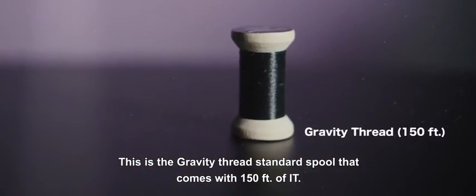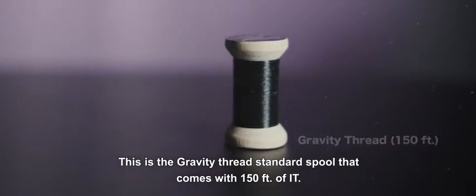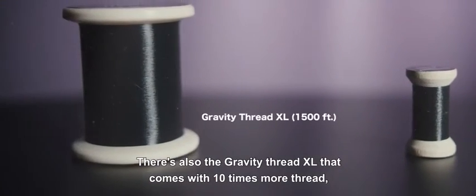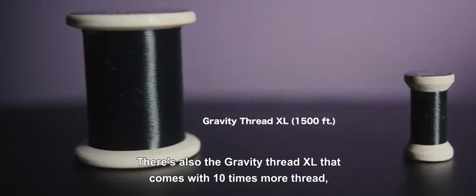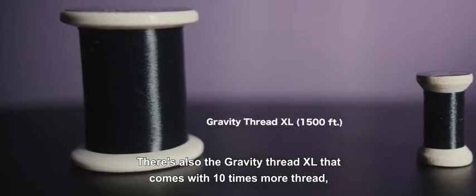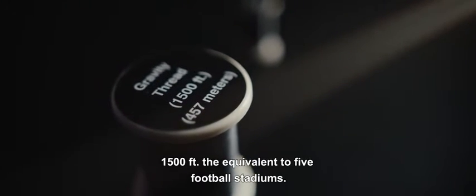The Gravity Thread standard spool comes with 150 feet of thread. There is also the Gravity Thread XL that comes with 10 times more thread—1500 feet, the equivalent of 5 football stadiums.